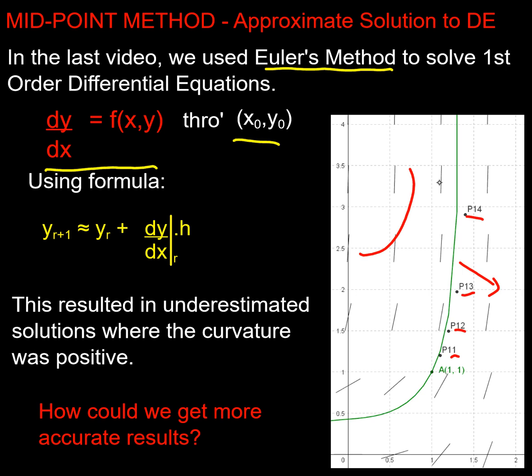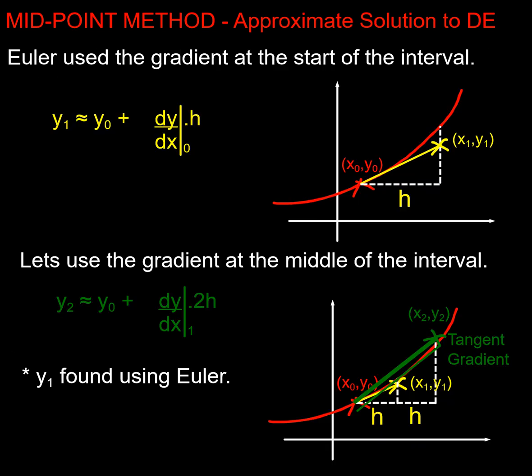So why is this happening? Well, at every point effectively I'm taking the tangent to predict the next point on it, so it's always underestimating because the gradient's increasing. And if I had a concave curve it'd be like that—all the points would be too high. So the problem is this approach seems to underestimate or overestimate the value of y. So how can I get a more accurate answer?